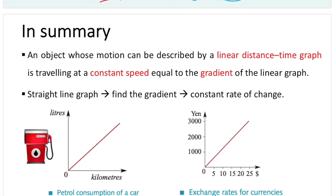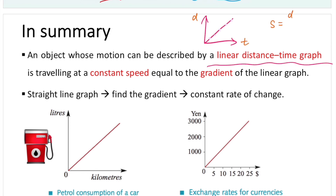In summary, an object whose motion can be described by a linear distance-time graph is traveling at constant speed. For a linear graph, the gradient is the same at any given point on the line. The constant speed equals the gradient of the line graph, because we're measuring time versus distance and speed = distance/time — which is exactly how you find the gradient. For a straight-line graph, we can find its gradient using rise over run, and this will be the constant rate of change.